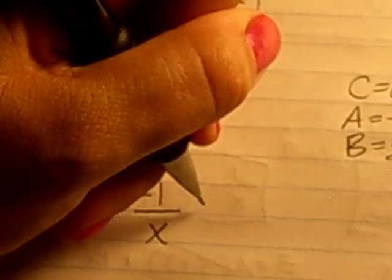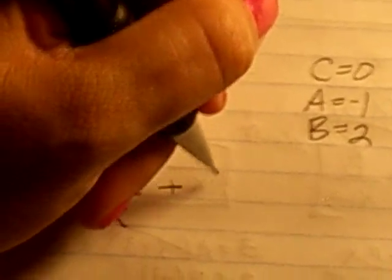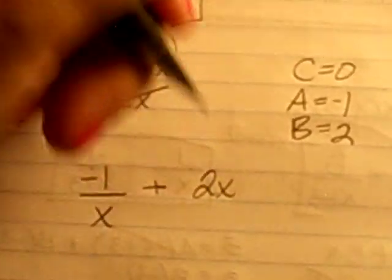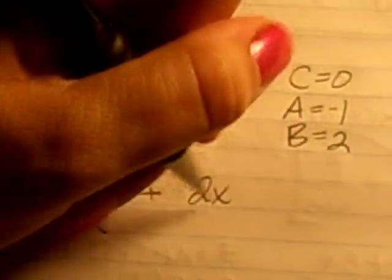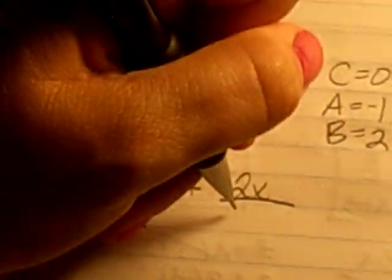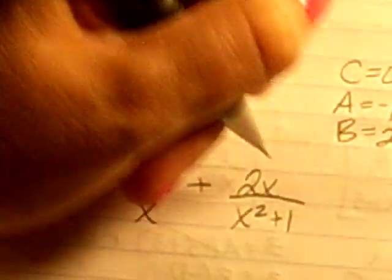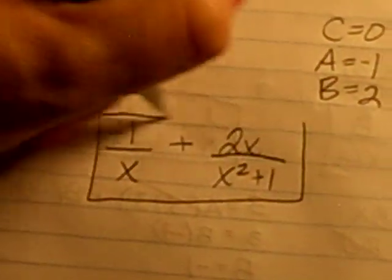And I'll keep everything else the same. So I'll have negative 1 over x plus 2x plus 0. But I'm not going to write the 0 plus 0. All over x squared plus 1. Okay, that is my final answer.